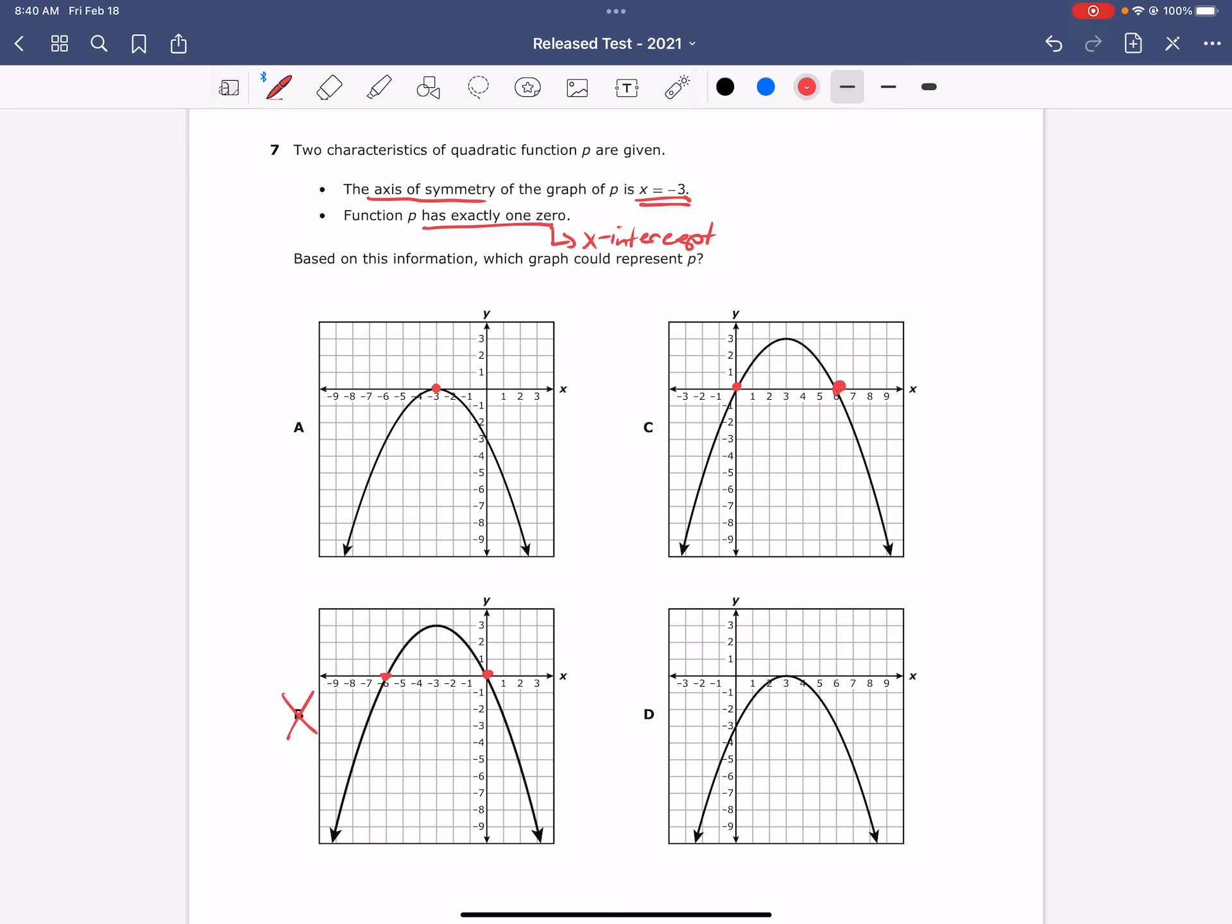Notice that it crosses the x-axis twice, and therefore it does not satisfy these two given conditions. Letter D does satisfy that characteristic because it crosses or touches the x-axis exactly one time, which means it has exactly one zero. So we're down to A and D, and we need to go back to the first characteristic to find the correct answer.